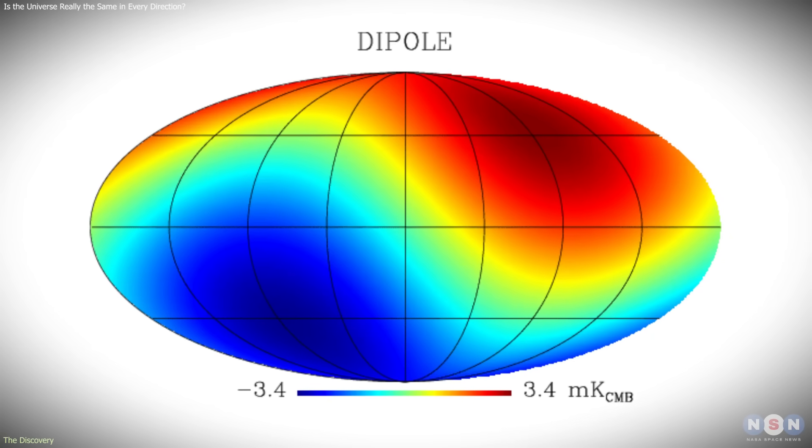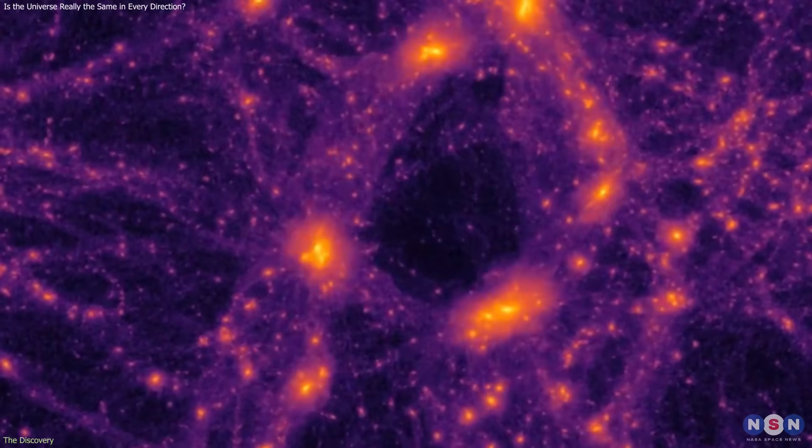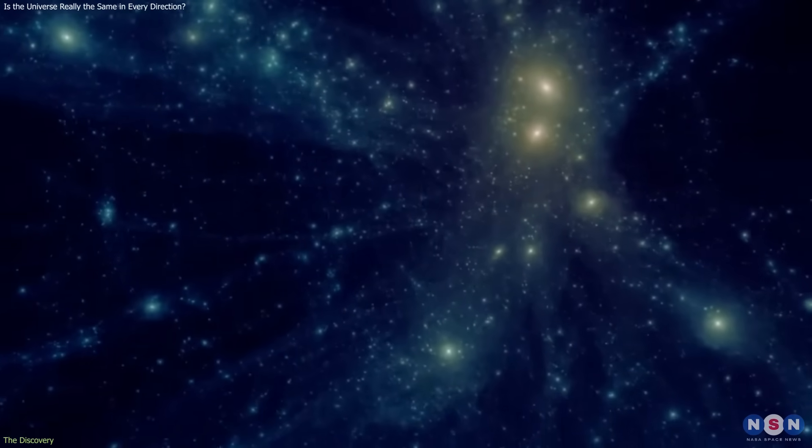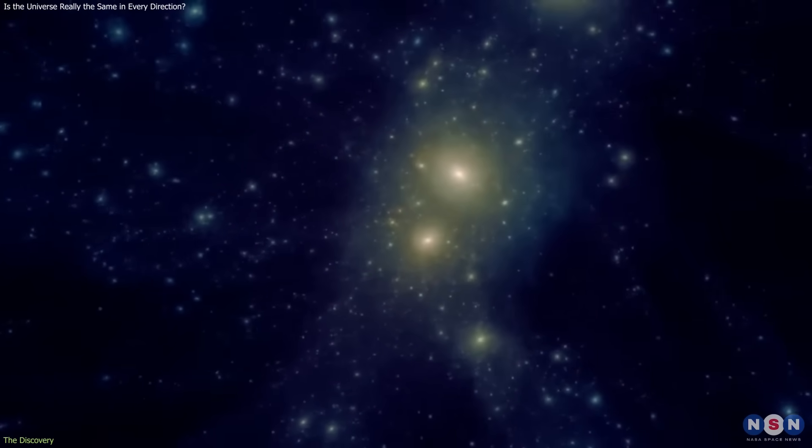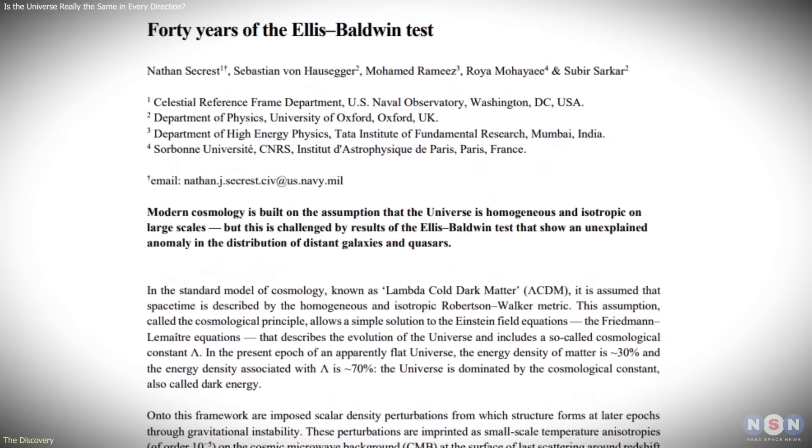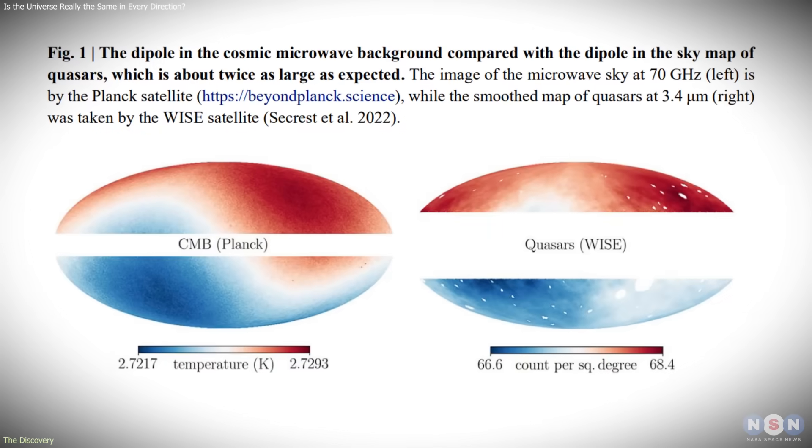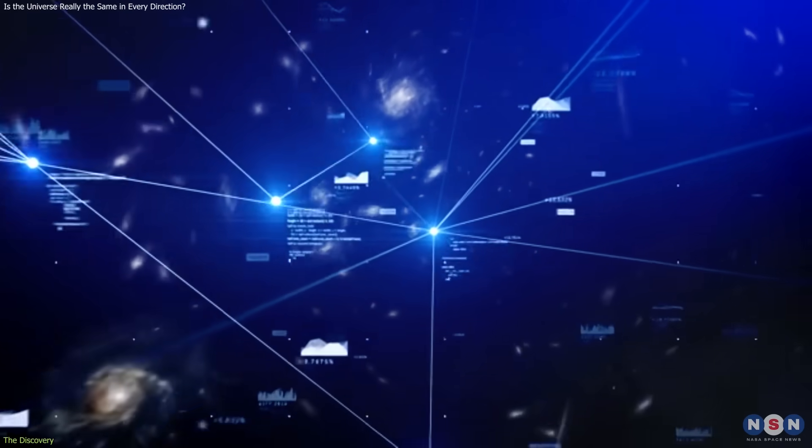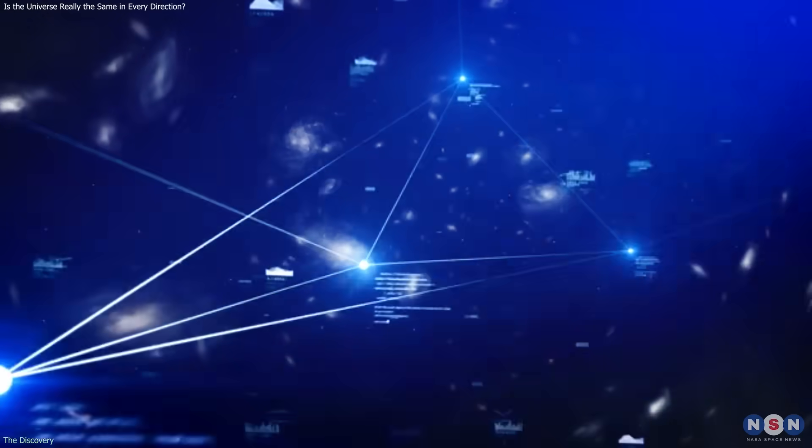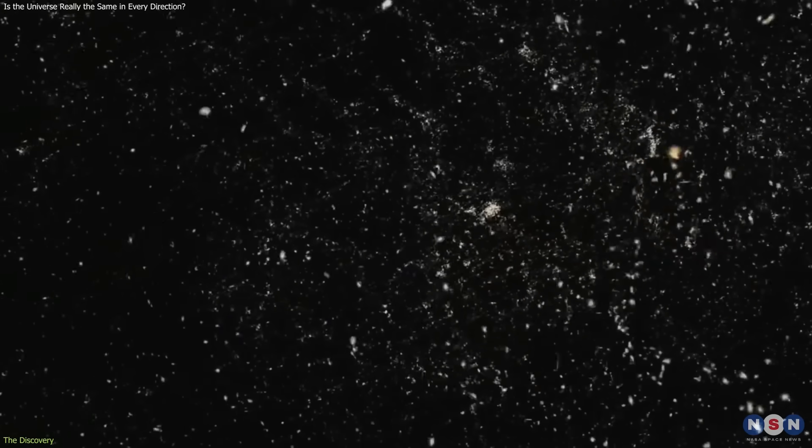However, the CMB is not the only place where such a dipole should appear. If the universe is isotropic on large scales, the distribution of distant matter should exhibit a corresponding dipole with the same orientation and strength. This expectation was formalized in the 1980s as the Ellis-Baldwin test, which provides a direct observational check of large-scale cosmic symmetry. Until recently, astronomical surveys were not large or deep enough to carry out this test reliably. That has now changed.